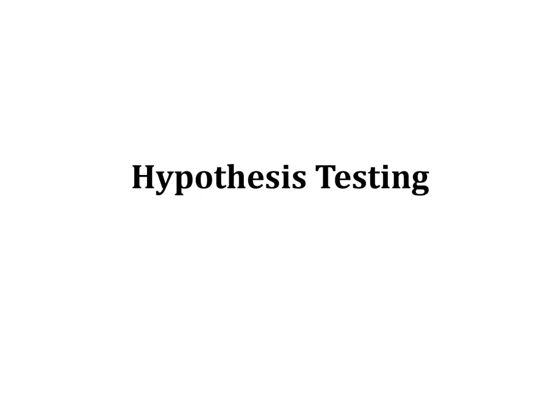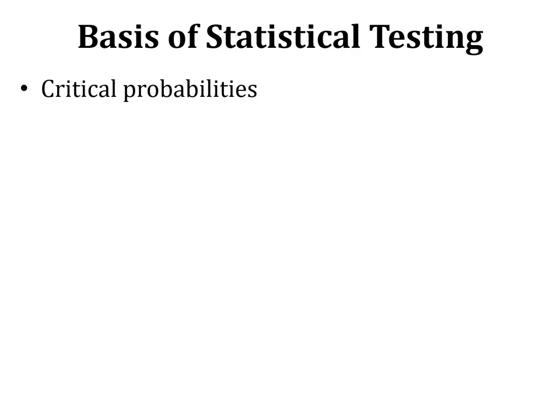Now we start to understand the concept of hypothesis testing, which is the basis of statistical testing. The basis of statistical testing, or hypothesis testing, makes use of the concept of critical probabilities. Critical probability is the probability below which the stated outcome of an event is unlikely to occur, and if that event does occur, that outcome is said to be significant.